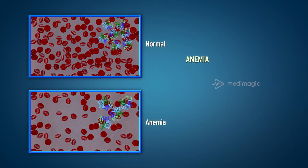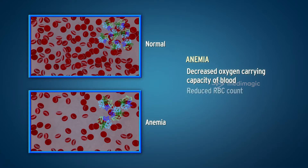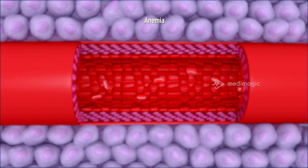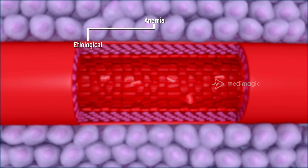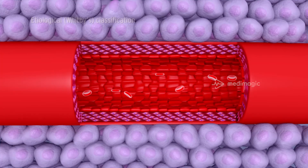Anemia is decreased oxygen carrying capacity of blood, either due to reduced RBC count, reduced hemoglobin, or abnormal hemoglobin. Classification of anemia can be based on etiological and morphological factors. Etiological classification characterizes anemia based on causative mechanisms.